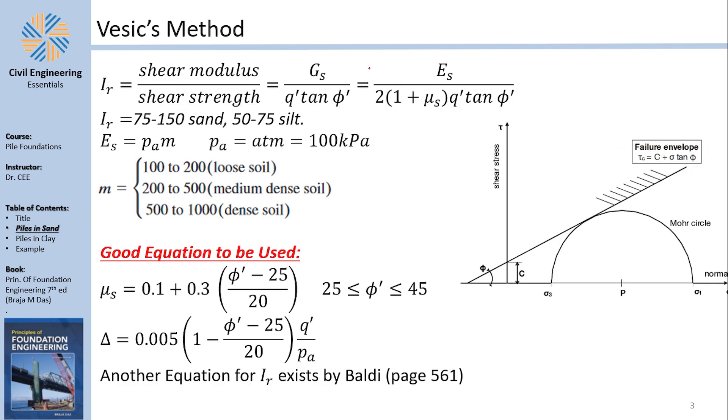How can I find Ir? Well, I need Es, I need μs, I need Q, and I need ϕ. Typically, Ir is between 75 and 150 for sand, and 50-75 for silt.